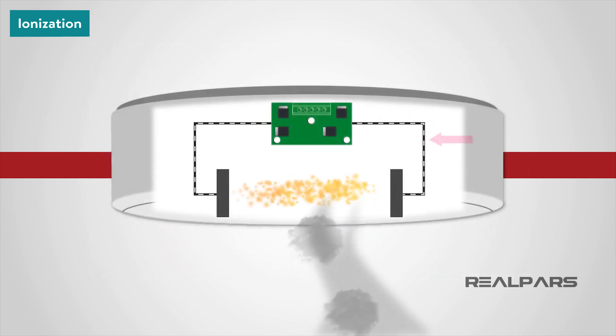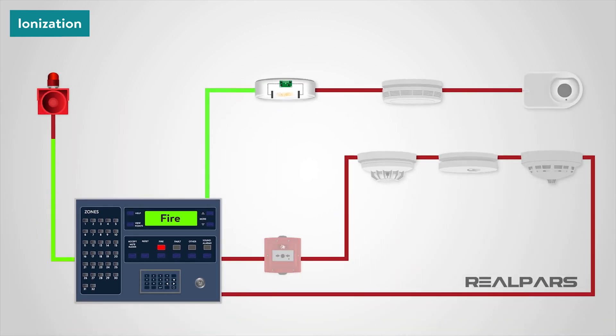When smoke enters the chamber, the current flow decreases. The drop in current flow is used to initiate an alarm.